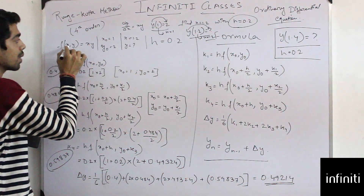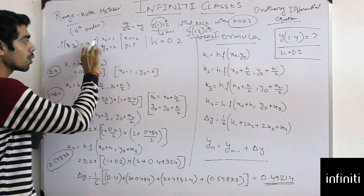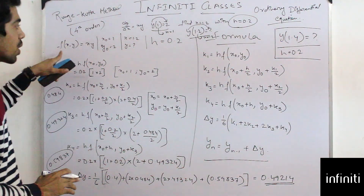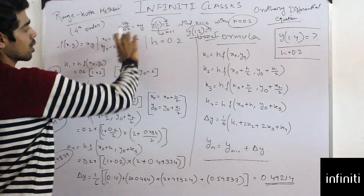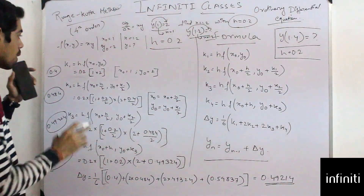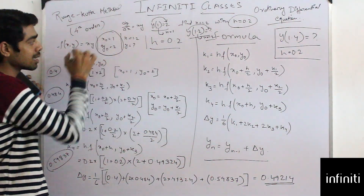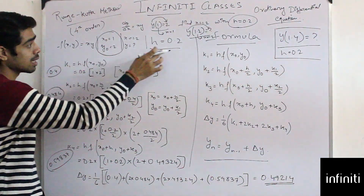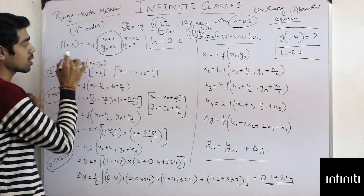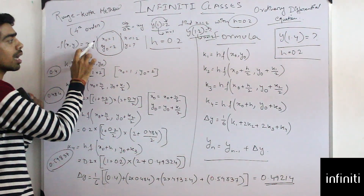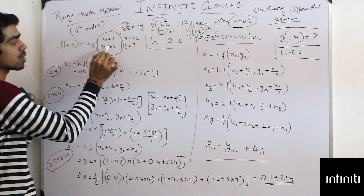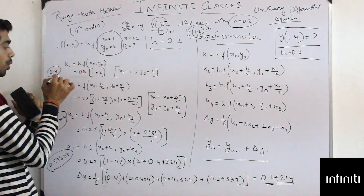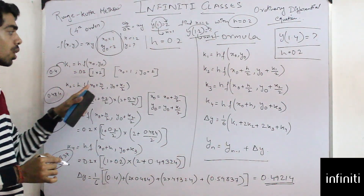Now I'll put these values into the equation for k1. k1 = h · f(x₀, y₀). h = 0.2, and f(x₀, y₀) = x₀ · y₀ = 1 × 2 = 2. So k1 = 0.2 × 2 = 0.4. Here x₀ = 1 and y₀ = 2.